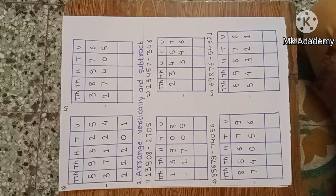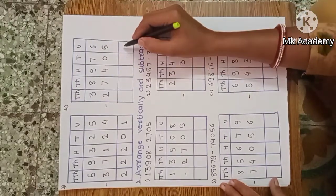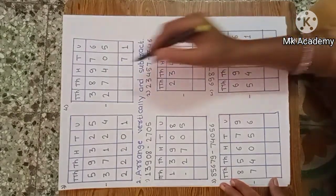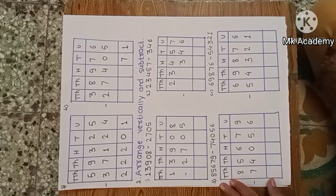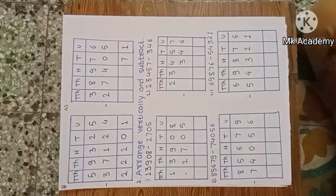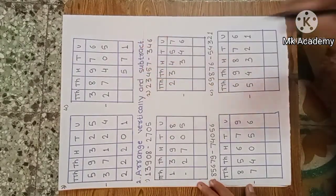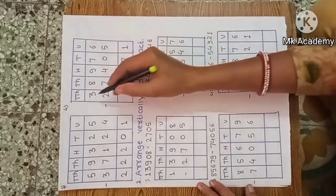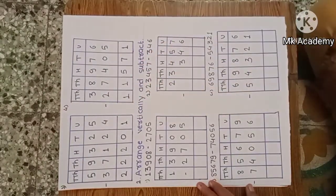Fourth example: thirty-eight thousand nine hundred seventy-six minus twenty-seven thousand four hundred and five. Start from unit place: 6 minus 5, one remaining. Tens: 7 minus 0, seven remaining. Hundreds: 9 minus 4, five hundreds remaining. Thousands: 8 minus 7, one remaining. Ten thousands: 3 minus 2, one remaining. The answer is eleven thousand five hundred and seventy-one.